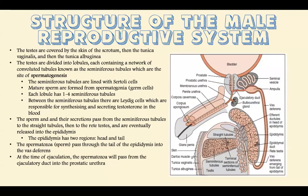Here's a schematic of the male reproductive system. The testes are covered by the skin of the scrotum, the tunica vaginalis, and the tunica albuginea. The testes are divided into lobules, and each lobule contains a network of convoluted tubules known as the seminiferous tubules, which are the site of spermatogenesis. The seminiferous tubules are lined with Sertoli cells. We mentioned Sertoli cells in embryonic development, and now we'll discuss them in adult physiology as well.